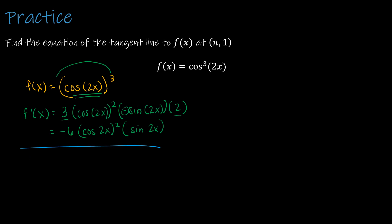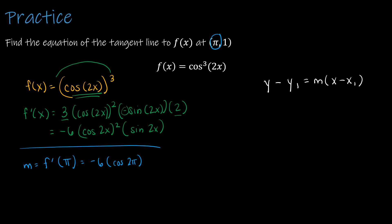Now I need to find the slope by evaluating f prime at x equals pi. Substituting: negative 6 times cosine of 2 pi squared times sine of 2 pi. Cosine of 2 pi equals 1, so 1 squared is 1. Sine of 2 pi equals 0. Multiplying everything out gives a slope of 0.